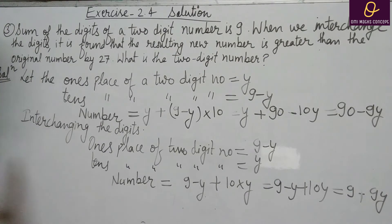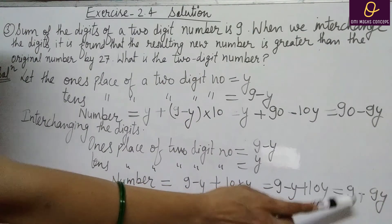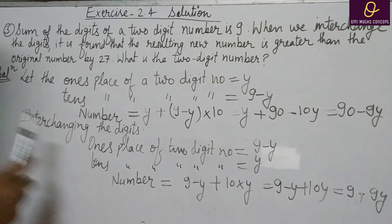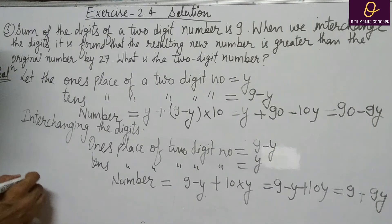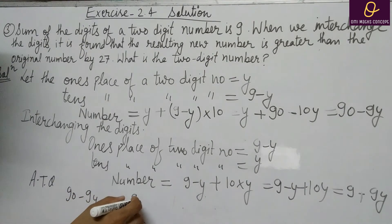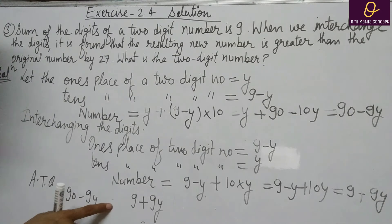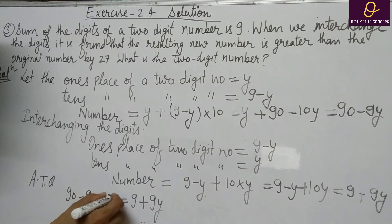The resulting new number is greater than the original number by 27. New number greater है, तो equal to का sign रखते हैं. According to question दोनों numbers को equal to रखें. New number greater है, इसलिए original number की side में 27 add करेंगे: 90 minus 9y plus 27 is equal to 9 plus 9y. यह equation आ गई अब.